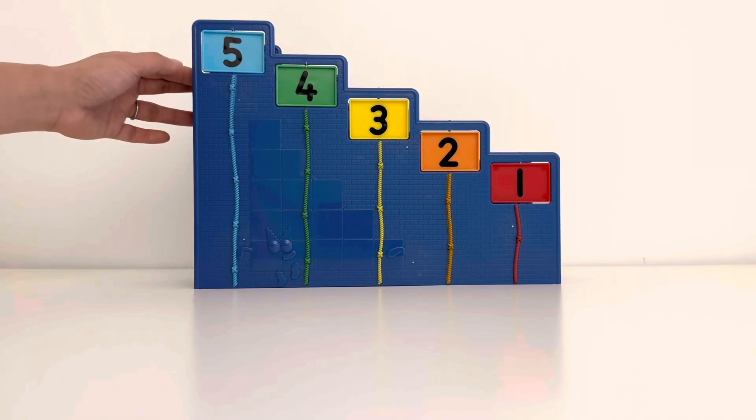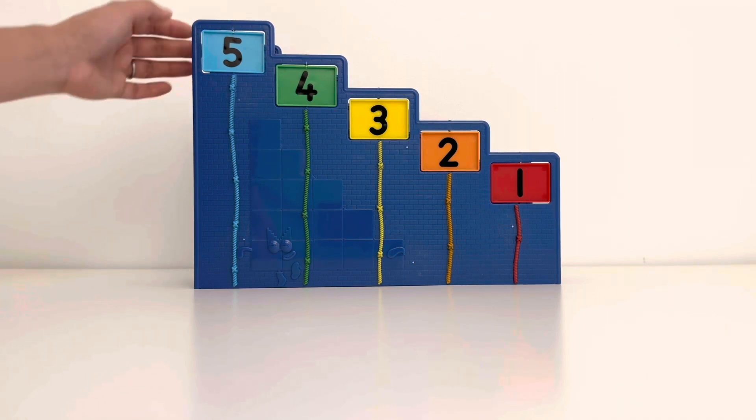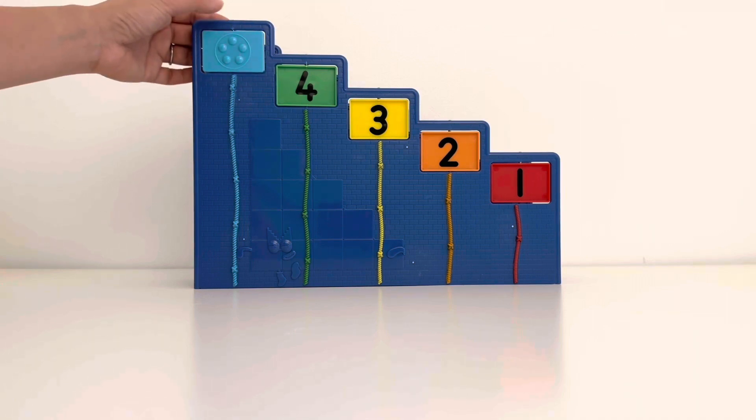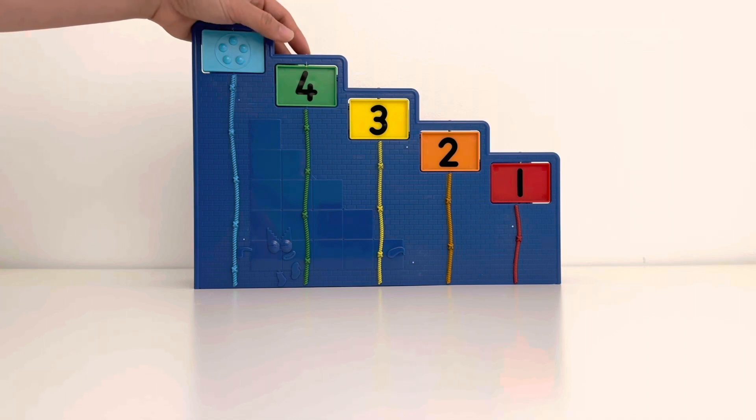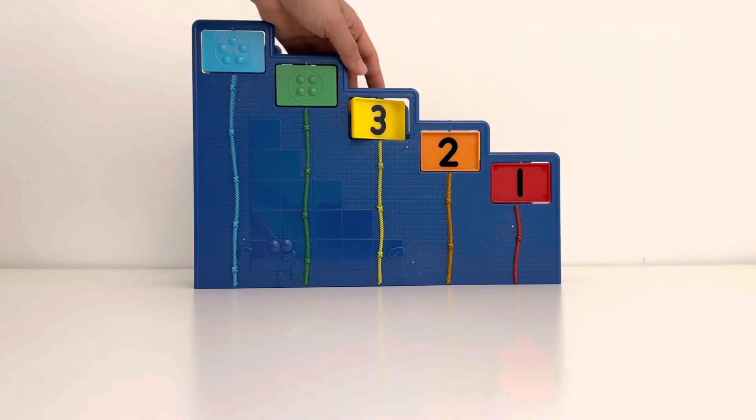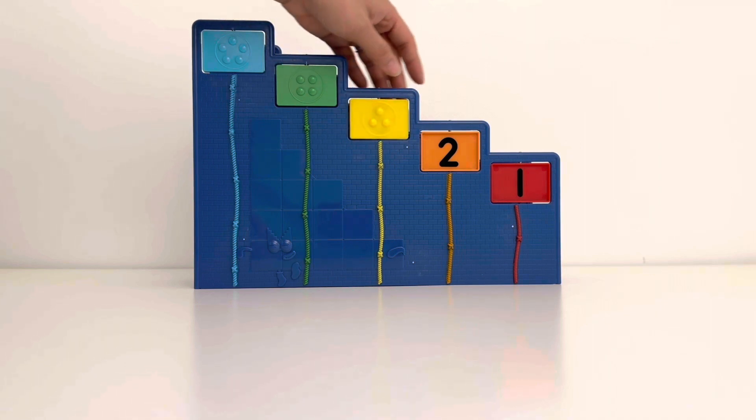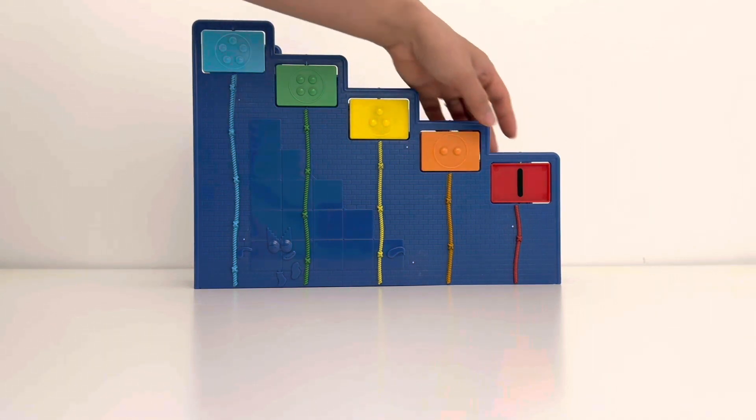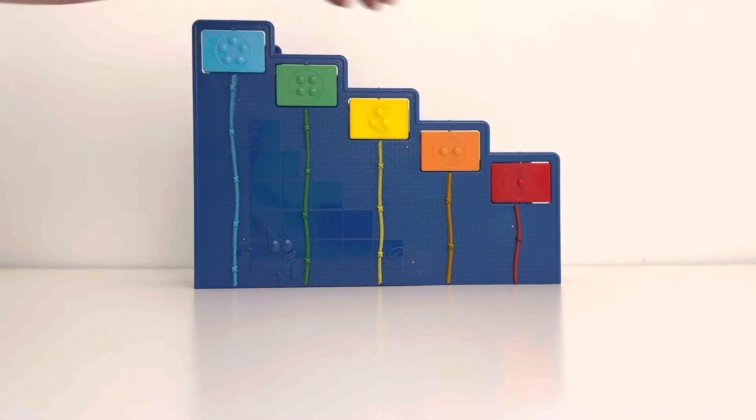And now, let's have a look and see what's behind the doors. Behind Five's door, we have five blue circles. Up next, we have four green circles. And then, we have three yellow circles, two orange circles, and one red circle.